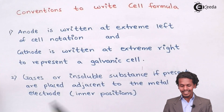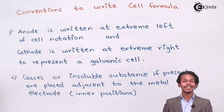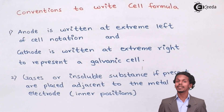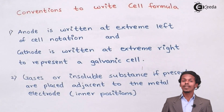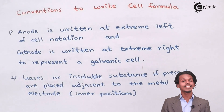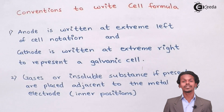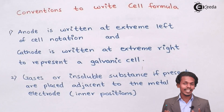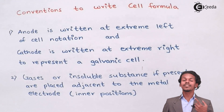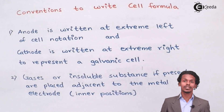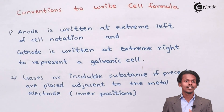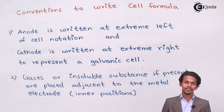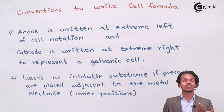The cathode is written at the extreme right to represent a galvanic cell. There are basically two electrodes involved in a galvanic cell — one is the anode and one is the cathode. The anode should be written at the extreme left while the cathode should be written at the extreme right. These are the first rules to represent a cell formula for a galvanic cell.